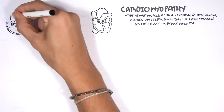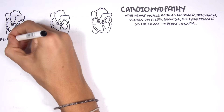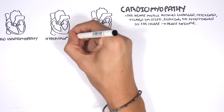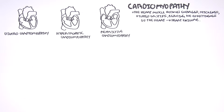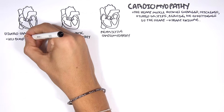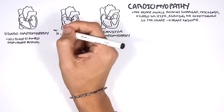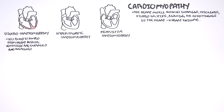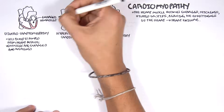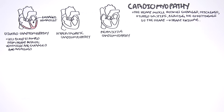Dilated cardiomyopathy is when there is less blood pumped from the heart because the ventricles are enlarged and weakened. Dilated cardiomyopathy can lead to systolic heart failure with a big decrease in ejection fraction. We have enlarged ventricles with dilation.